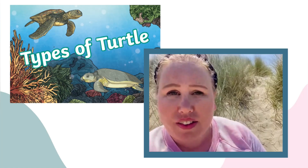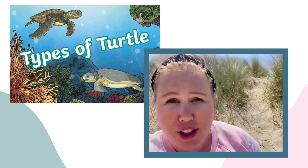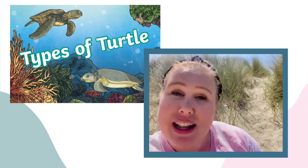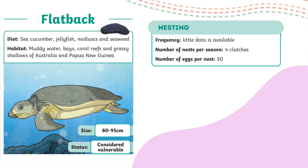There are seven types of sea turtle, each with their own unique features. Let's take a closer look at some. The flatback turtle loves to eat sea cucumbers, jellyfish, mollusks and seaweed.